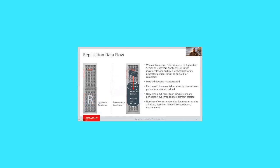For replication: you add a protection policy to a replication server object on the upstream appliance, and all future incremental and archive log backups are queued for replication. The first replicated backup is the level zero, then every level one and archive log backup is queued and sent to the downstream. New virtual full records on the downstream are synchronized to the upstream periodically via the reconcile process. The number of concurrent replication streams can be adjusted based on available network bandwidth or data center environment requirements.